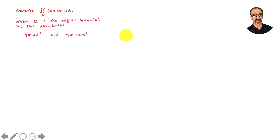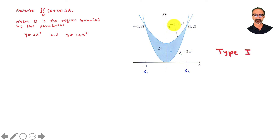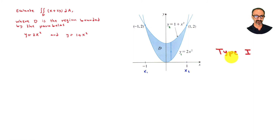For this example with y = 2x² and y = 1 + x², here's the graph. One parabola has vertex at the origin; the other is shifted up one unit — that's why they intersect. The arrow going up and down tells us this is type one. You always need to identify which curve comes first and which comes second, and whether to write dy dx or dx dy.